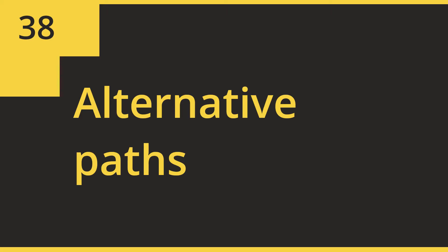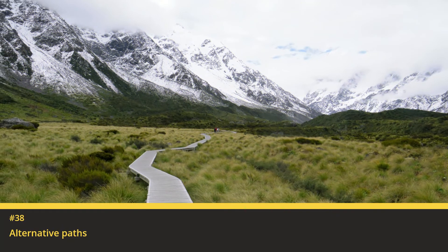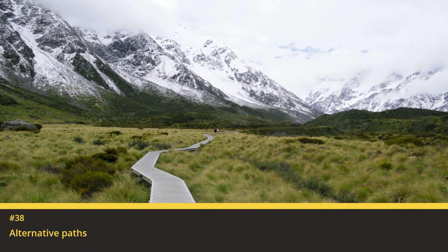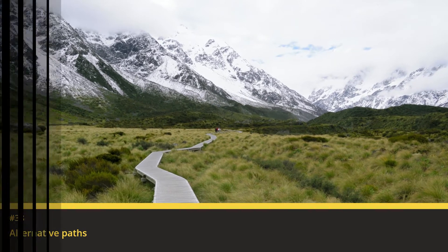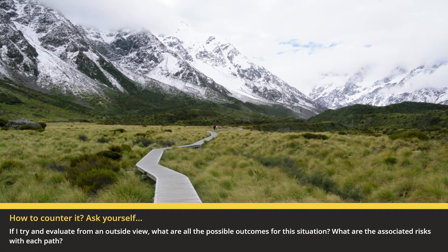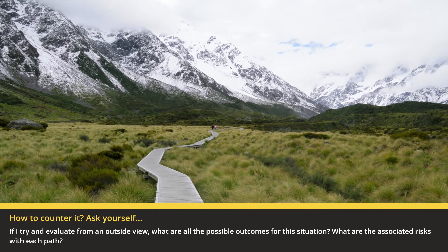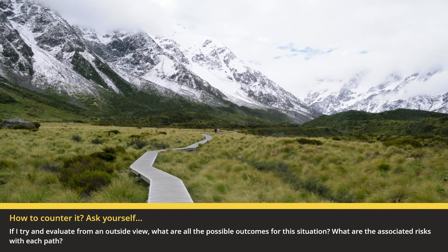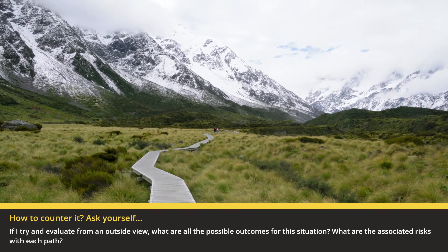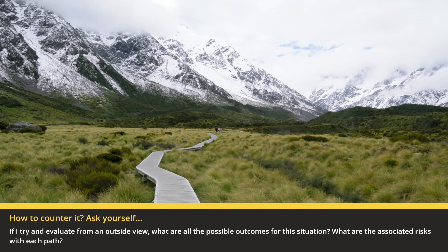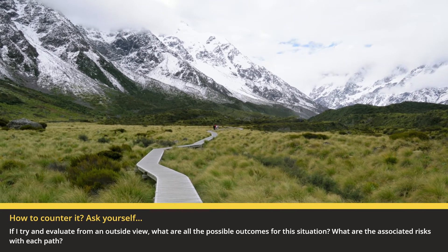38. Alternative Paths: We fail to consider all the outcomes which could have happened, and therefore underestimate risk. How to avoid this bias? Ask yourself: if I try and evaluate from an outside view, what are all the possible outcomes for this situation? What are the associated risks with each path?